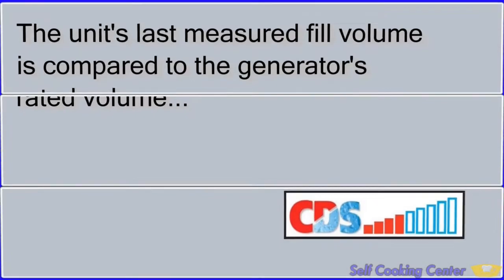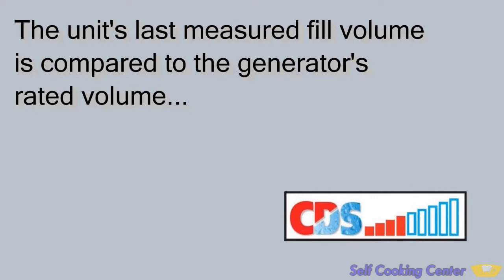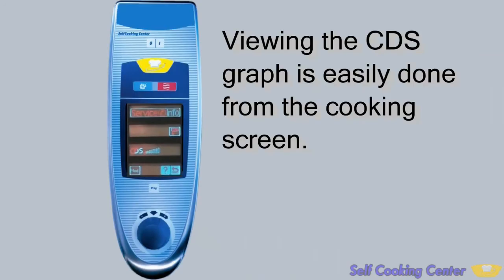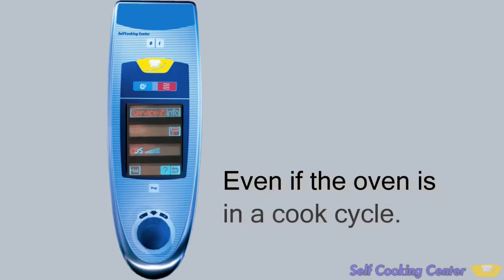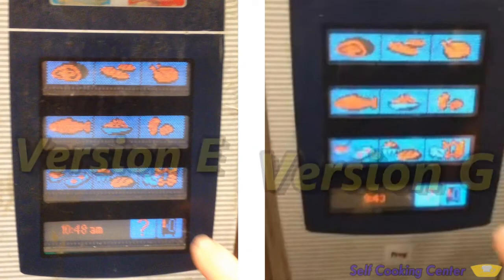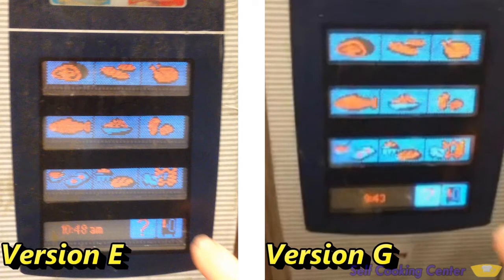Remember that during CDS operation, the unit's last measured fill volume is compared to the generator's rated volume, and the calculated amount of scale is represented by red bars. Accessing and viewing the CDS graph is easily done from the cooking screen, even if the oven is in a cook cycle. There are some subtle differences between the version E and version G oven displays, but getting to the CDS graph is the same.